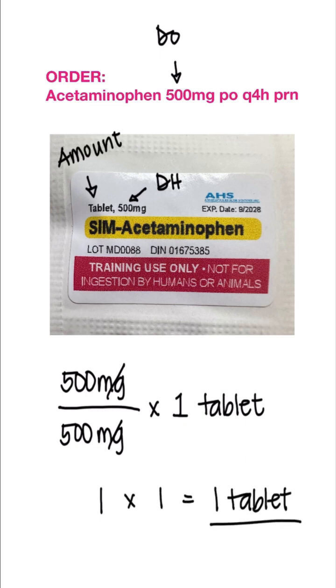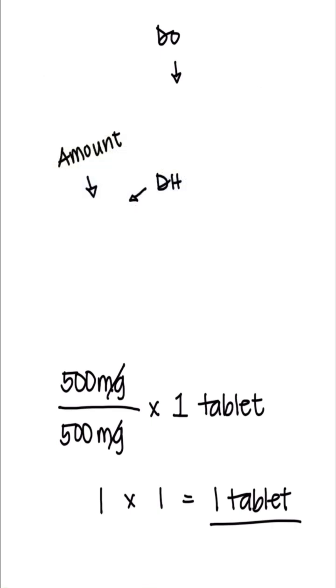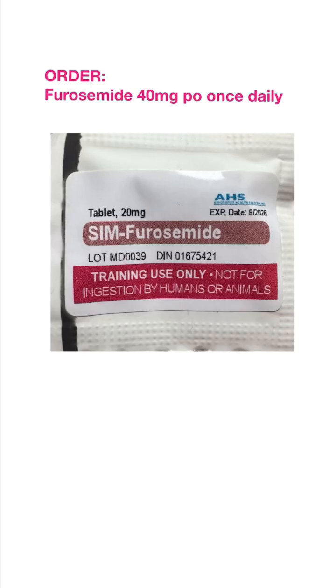Here's another example. We have furosemide 40 milligrams PO once daily. The doctor's order is 40 milligrams. What we have on hand is 20 milligrams per tablet.